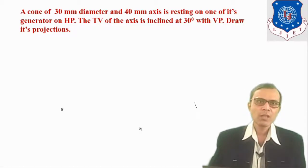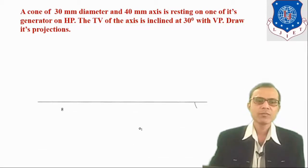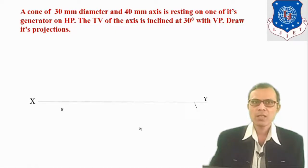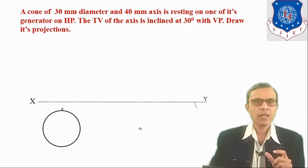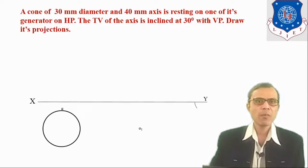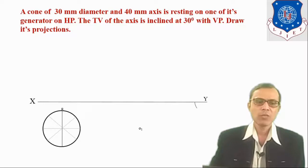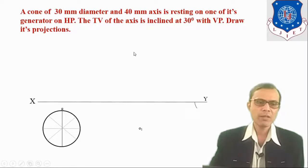Now let's start the problem. First of all, draw a reference line XY. Start from the true shape of the base and draw a circle of diameter 30 mm. The diameter is 30 mm, so take a compass radius equal to 15 mm and draw the circle. Divide the circle into 8 equal parts. You can also divide the circle into 12 equal parts.